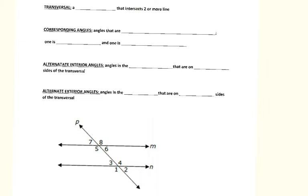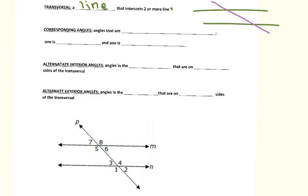Other types of angles are created when you have a transversal — a line that intersects two or more lines, often parallel lines. With two parallel lines cut by a transversal, I create three different pairs of angle types. The first type is corresponding angles: angles in corresponding places where one is on the interior and one is on the exterior.